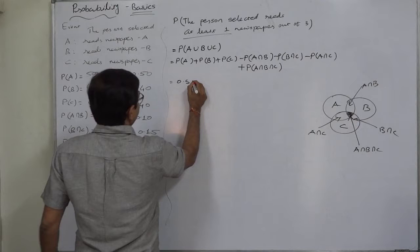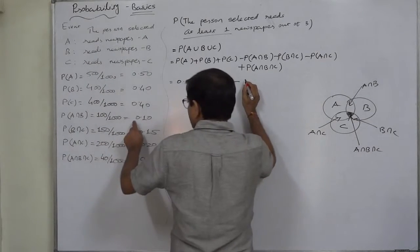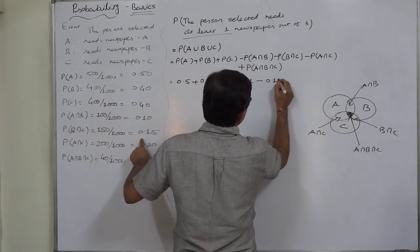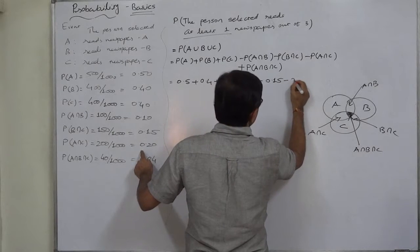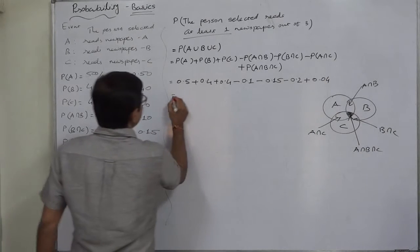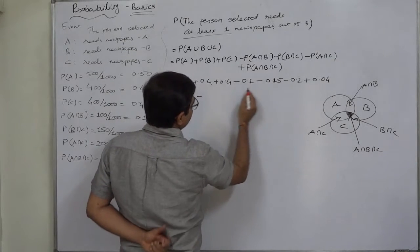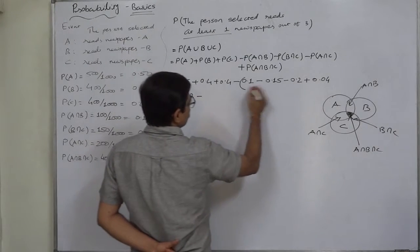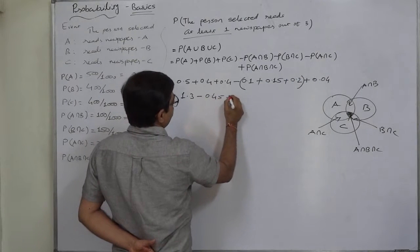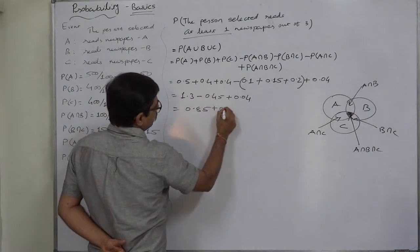Substituting the values: P(A) = 0.5, P(B) = 0.4, P(C) = 0.4, minus P(A∩B) = 0.1, minus P(B∩C) = 0.15, minus P(A∩C) = 0.2, plus P(A∩B∩C) = 0.04. The summation of the first three is 1.3, the summation of the intersection terms is 0.45, so the net result is 0.85 plus 0.04.